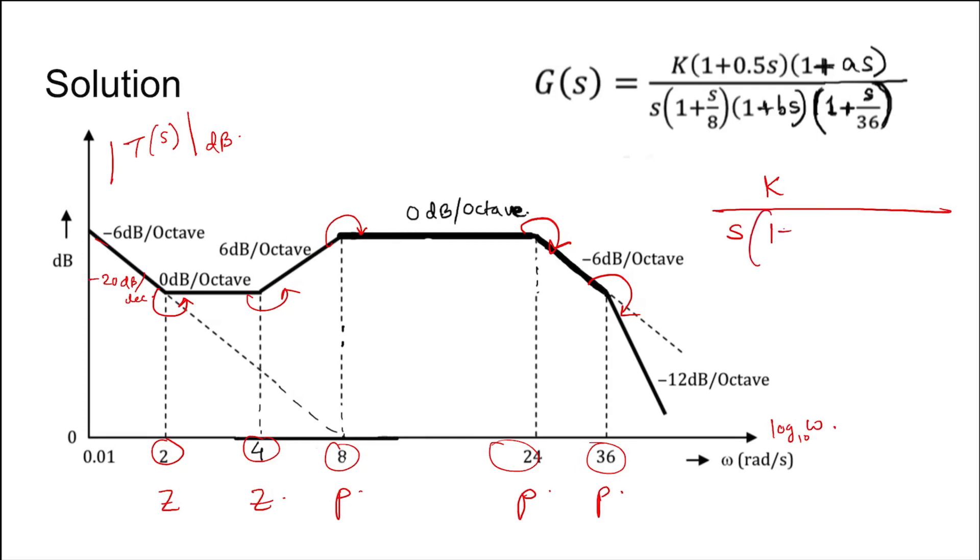So all the poles I am writing: (1 plus s/8)(1 plus s/24)(1 plus s/36) in time constant form. And this is zero and this is zero: (1 plus s/2) and (1 plus s/4). Now we need to find the value of a, b, and k.